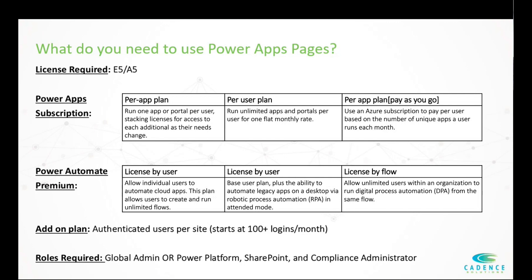After you've created a portal, you're going to need Power Automate Premium licensing. In order to have that connection between SharePoint and the Dataverse, we're using a premium connector. For Power Automate Premium, we recommend the first option — licensed by user — which allows individual users to automate cloud apps and create unlimited flows. The second plan adds the ability to automate legacy apps. And licensed by flow allows unlimited users within your organization to run these digital process flows. For the add-on plan for the portal, in order to allow authenticated logins, that's just an add-on on top of the portal. The recommended role for implementing the solution is global administrator, or a combination of Power Platform, SharePoint, and Compliance Administrator roles.